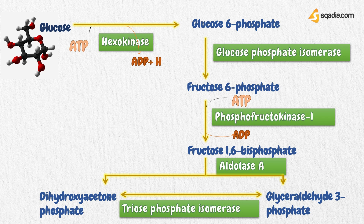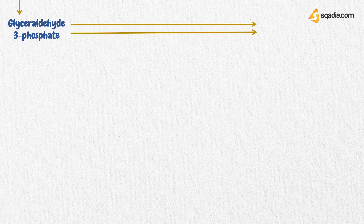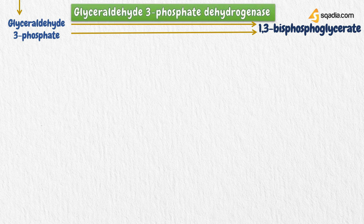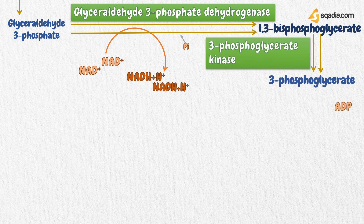These two molecules are interconvertible by triose phosphate isomerase. Because of the production of two three-carbon molecules, all downstream reactions from this point occur in a two-fold manner, with two molecules of every component at each step. Glyceraldehyde-3-phosphate dehydrogenase converts glyceraldehyde-3-phosphate into 1,3-bisphosphoglycerate, producing NADH with a hydrogen ion from NAD+. In the next step, 3-phosphoglycerate kinase converts 1,3-bisphosphoglycerate into 3-phosphoglycerate, releasing a phosphate molecule and converting ADP into ATP.